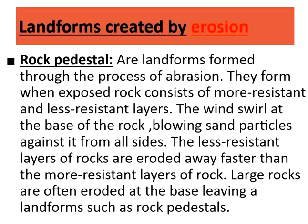Moving on to the landforms created by erosion — the first one is a rock pedestal. These are landforms formed through the process of abrasion. They form when exposed rock consists of more resistant and less resistant layers. The wind swirls at the base of the rock, blowing sand particles against it from all sides. The less resistant layers are eroded away faster than the more resistant rock, leaving a landform called a rock pedestal.